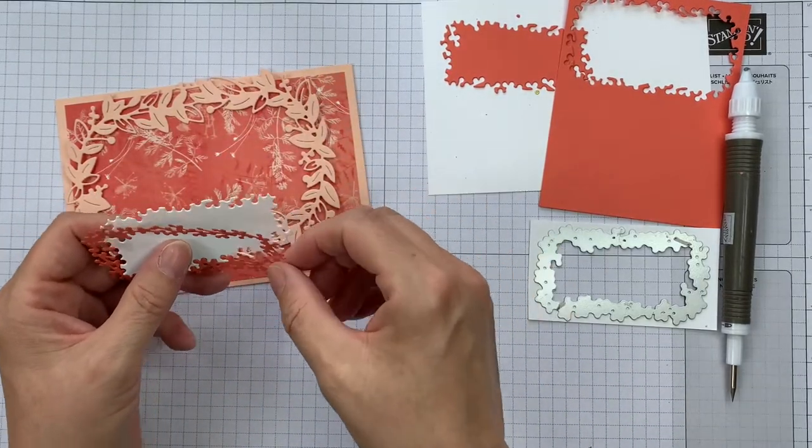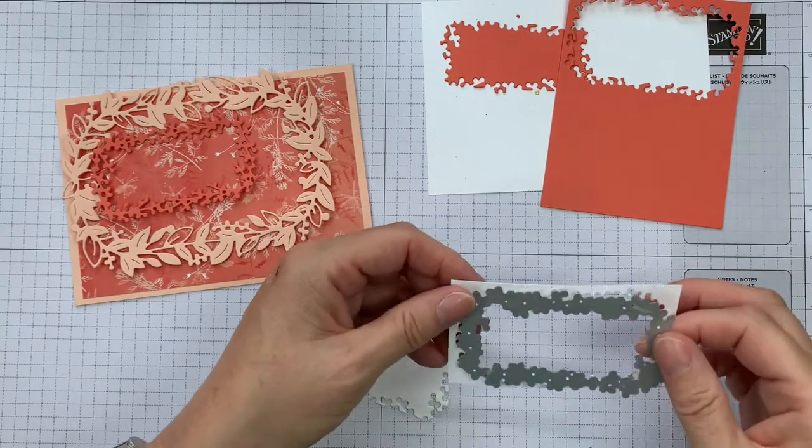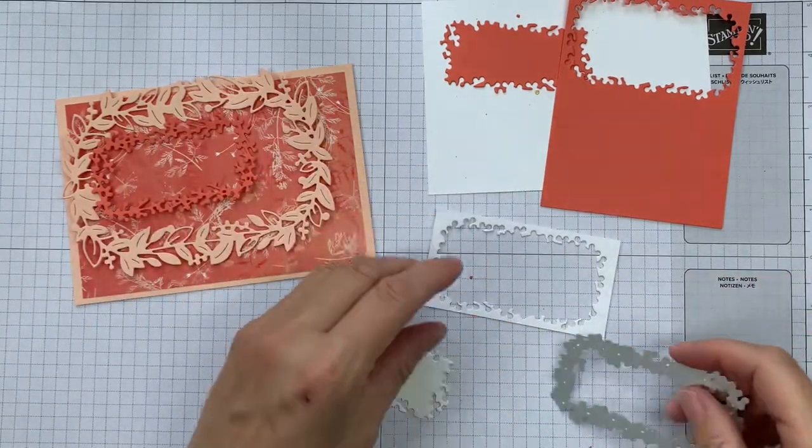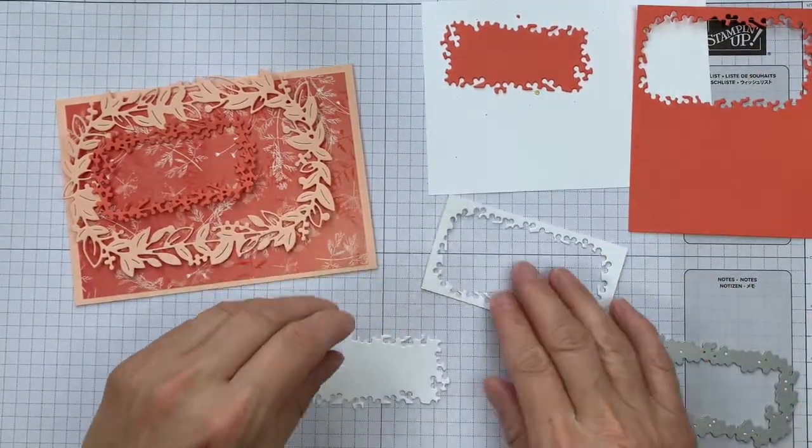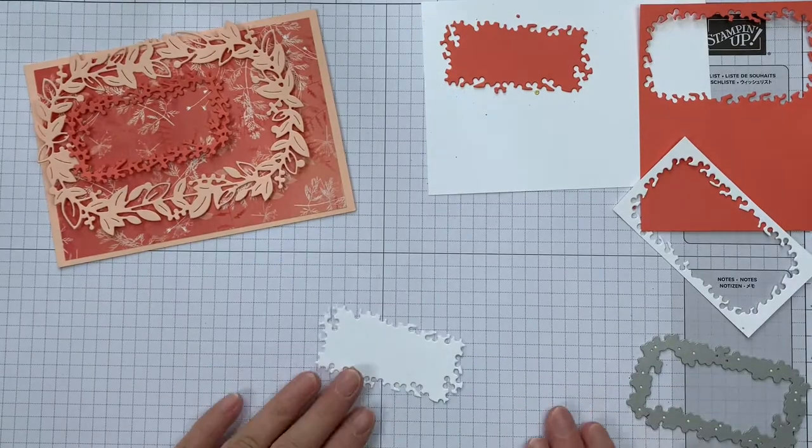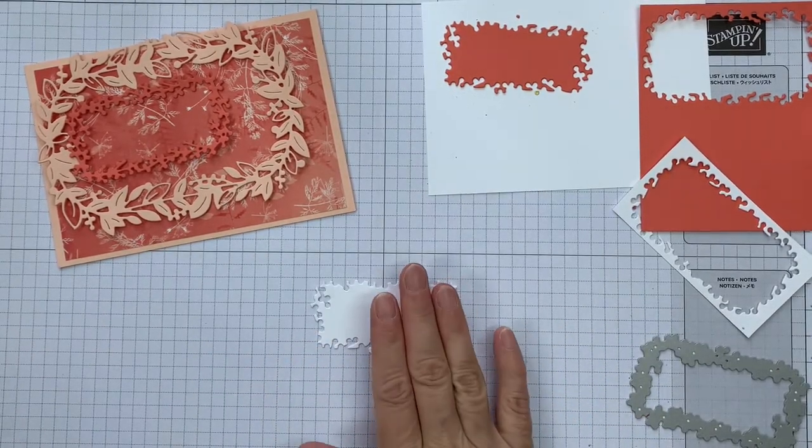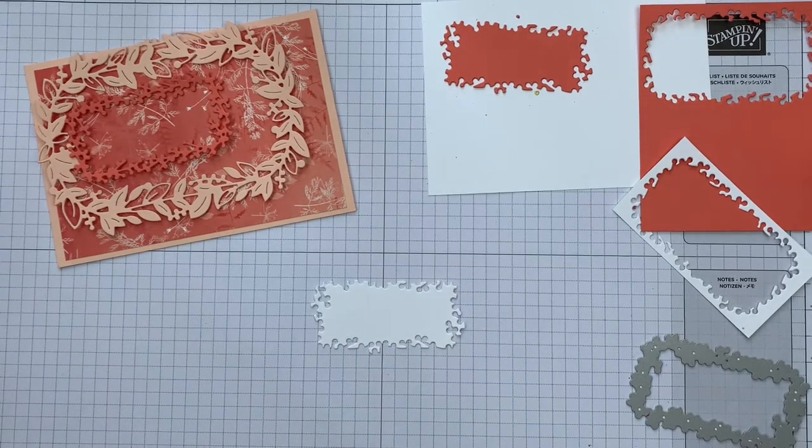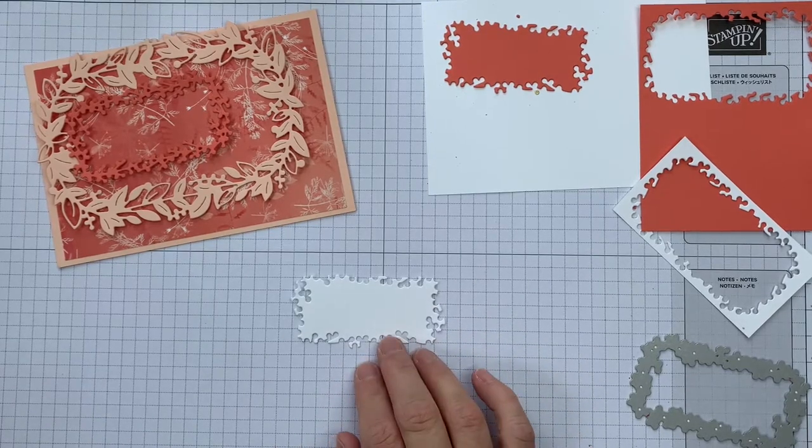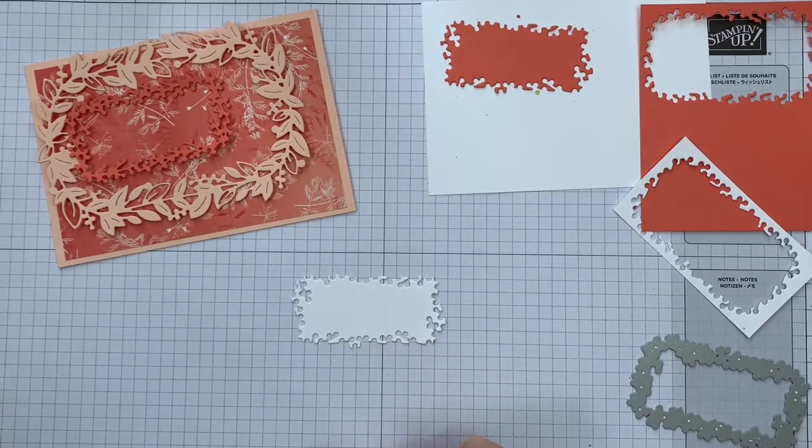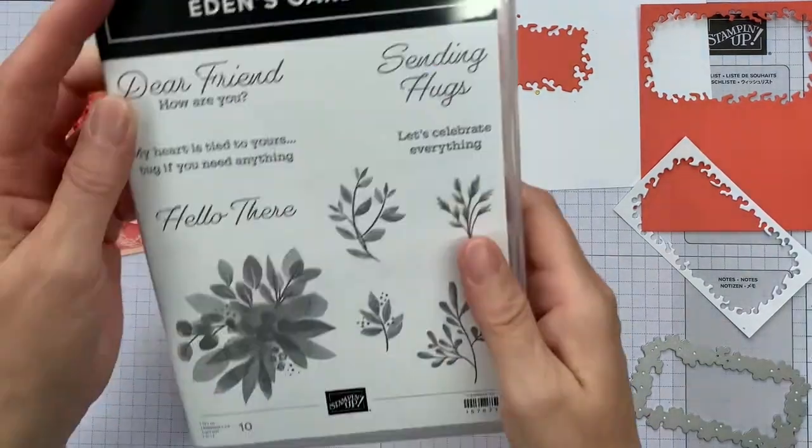But I'm actually going to take this out while I do stamp it. One of the tips that I've got for this is actually not to use the stamp set that comes with this, the Eden's Garden stamp set. Whilst it is a lovely stamp set, it's a cling stamp set which makes it rather more difficult to see exactly where you're stamping when you've got something as intricate as this.